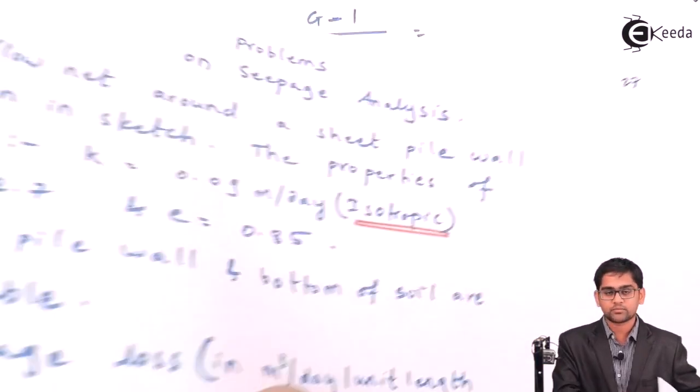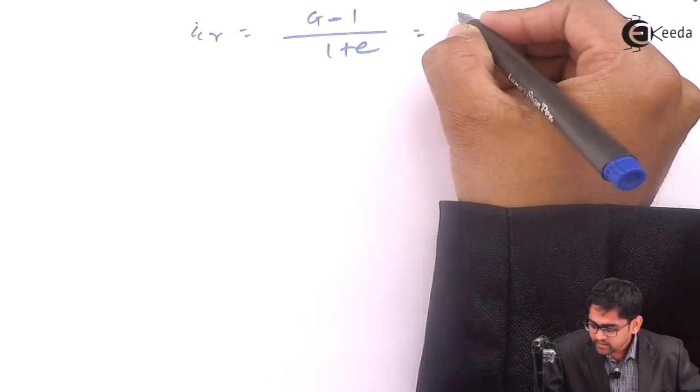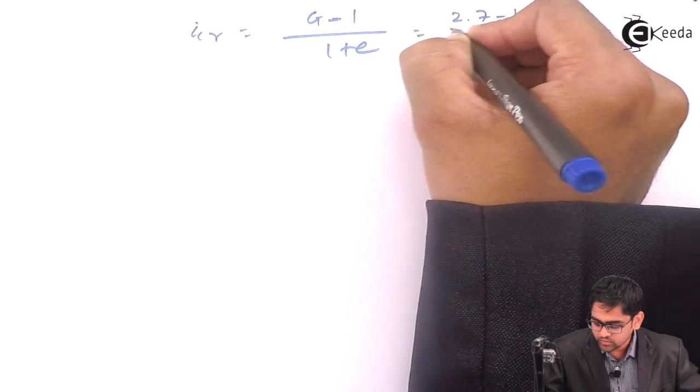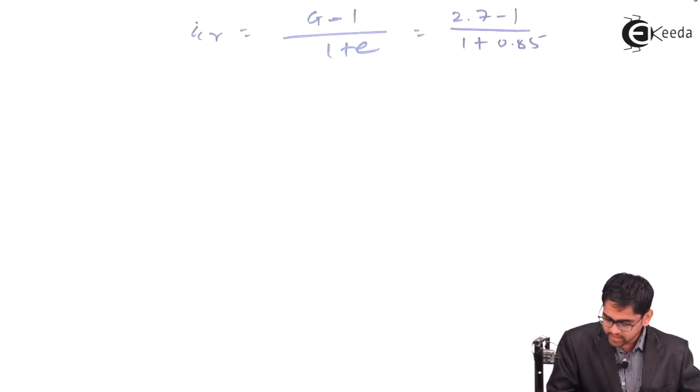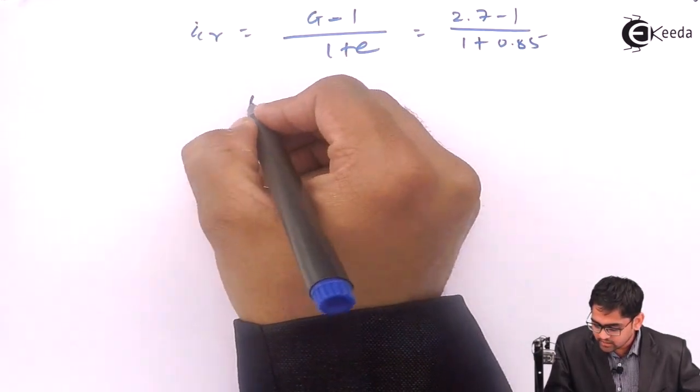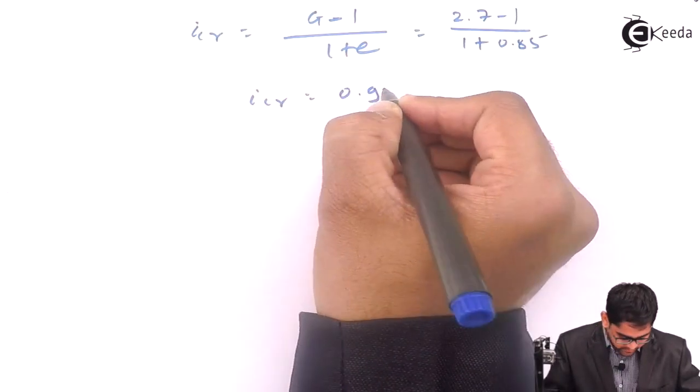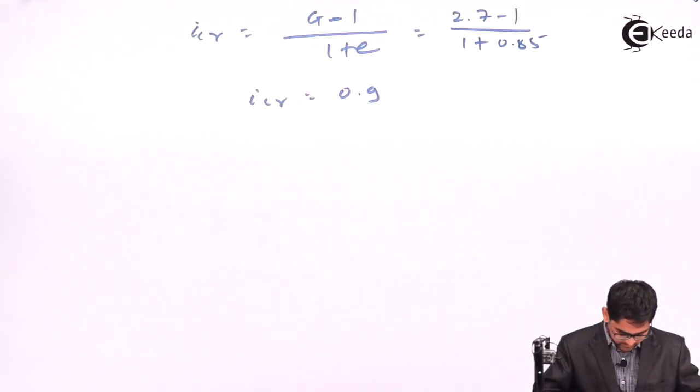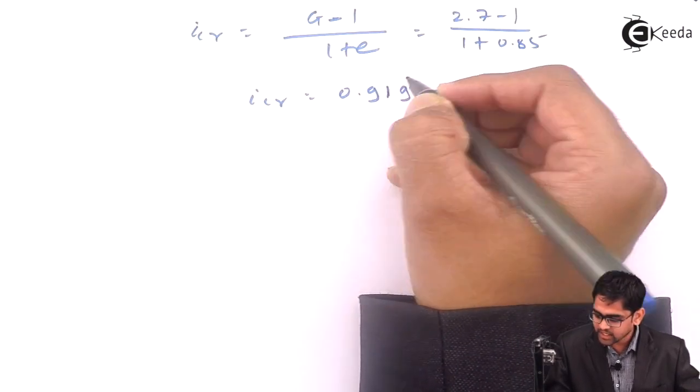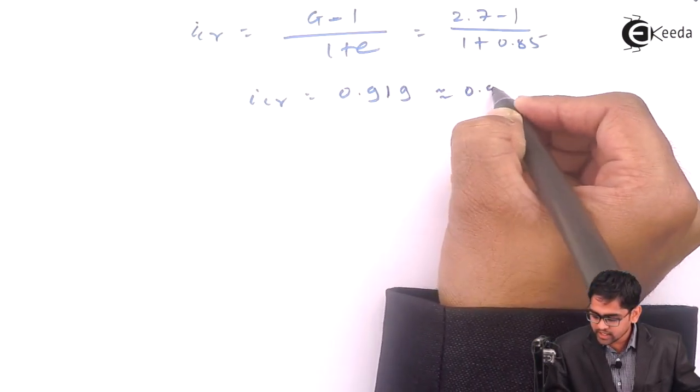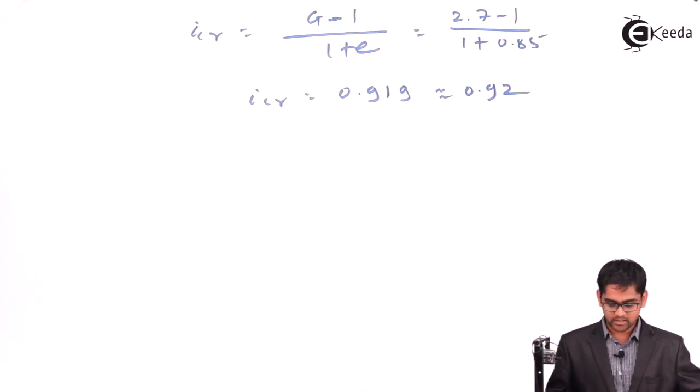GS is given 2.7, e is given 0.85. So it becomes 2.7 minus 1 divided by 1 plus 0.85. This becomes i critical equal to 0.9189, so take it equal to 0.92. This is the critical hydraulic gradient.